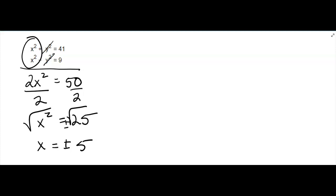If you go back and substitute in, let's take the top equation x squared plus y squared equals 41. You put in positive 5, because you have two answers here, positive 5 and negative 5. So let's put in the 5.